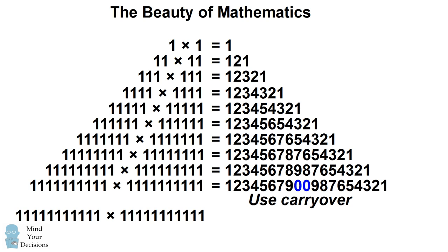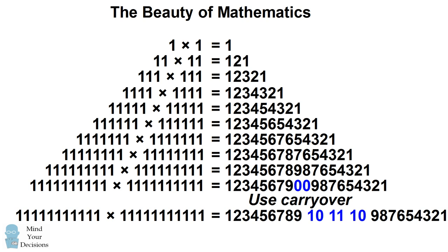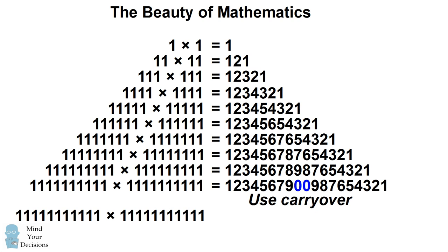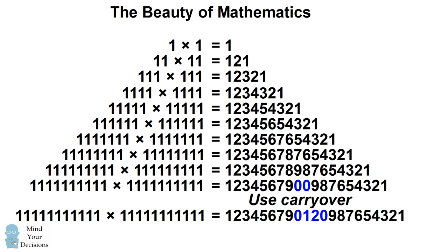Similarly, if you have a number with eleven 1's, multiplying by lines gives you a diagram that goes 1, 2, 3, 4, 5, 6, 7, 8, 9, 10, 11, 10, 9, 8, 7, 6, 5, 4, 3, 2, 1. To match the result on your calculator, we need to use carryover anytime we have a value more than 9 — carrying over the 10, the 11, and the 10. You end up with the pattern: 1, 2, 3, 4, 5, 6, 7, 9, 0, 1, 2, 0, then 9, 8, 7, 6, 5, 4, 3, 2, 1.